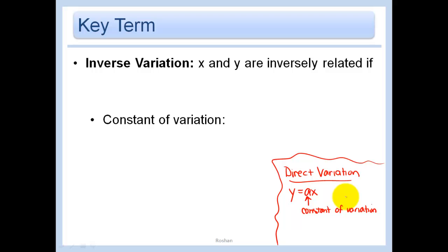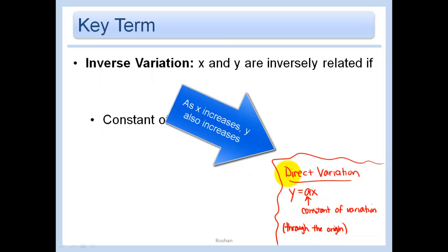Remember, a very important property was that it went through the origin. Because basically, this is just a line, Y equals MX plus B, where B equals 0, otherwise known as the Y-intercept equals 0. And with direct variation, it meant as X increased, Y also increased.